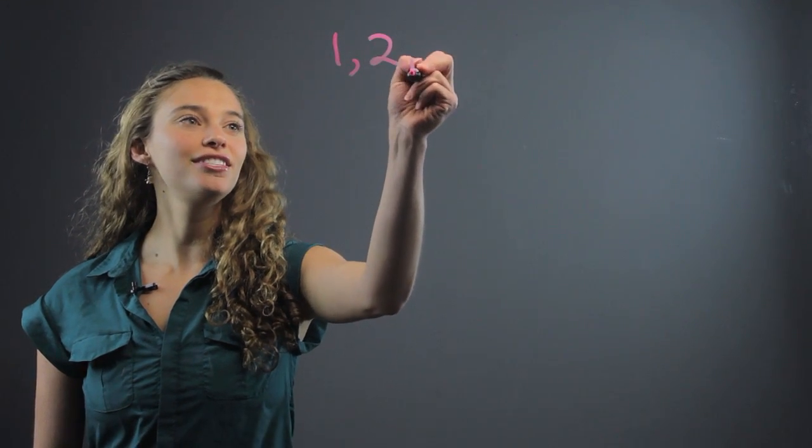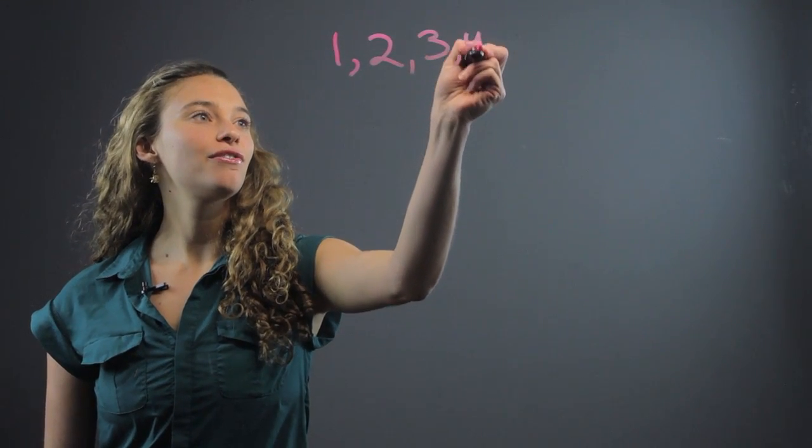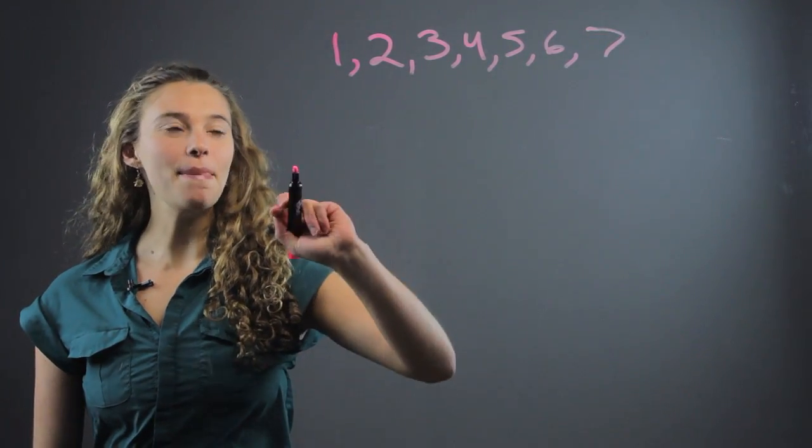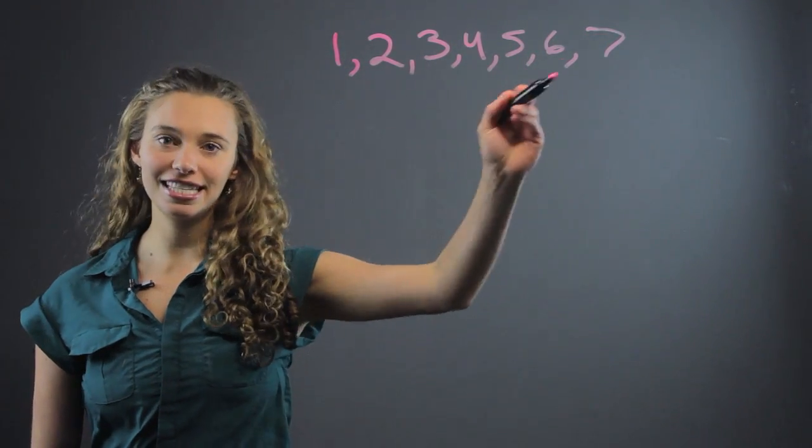So let's say you have the numbers 1 through 7. We'll make it simple. 1, 2, 3, 4, 5, 6, and 7. And you want to make a box and whisker plot with this data.